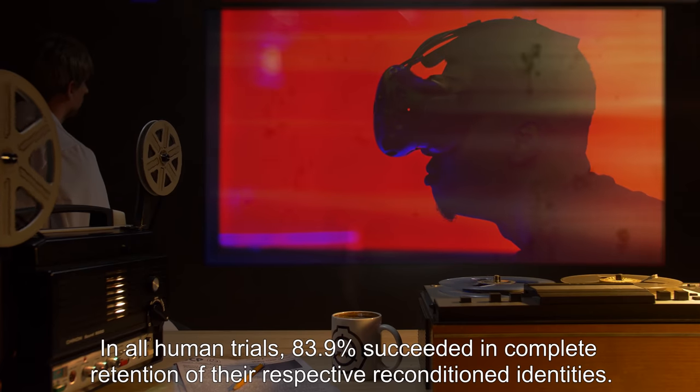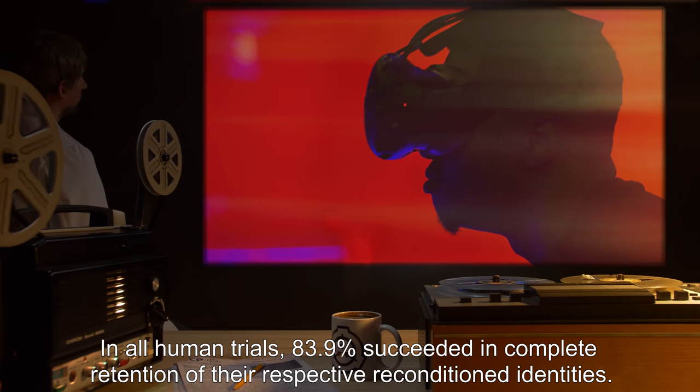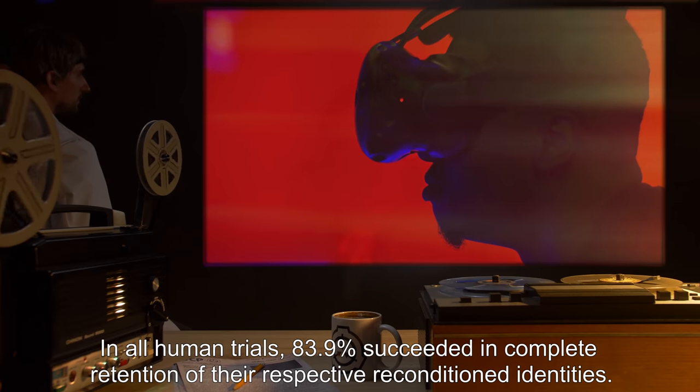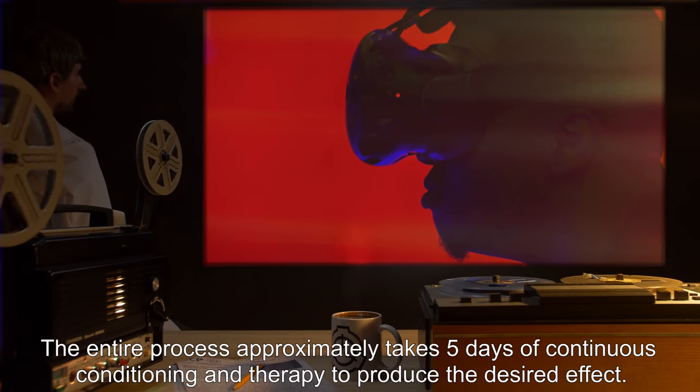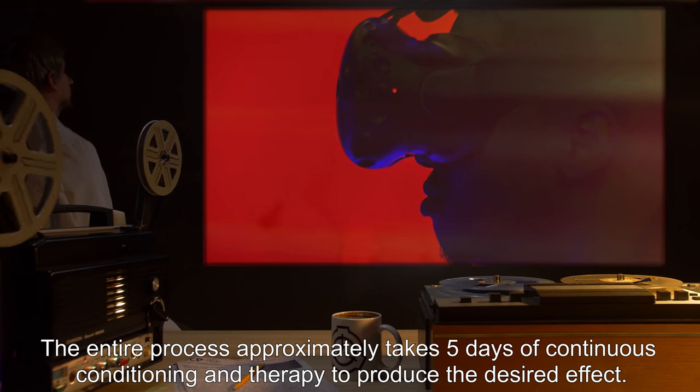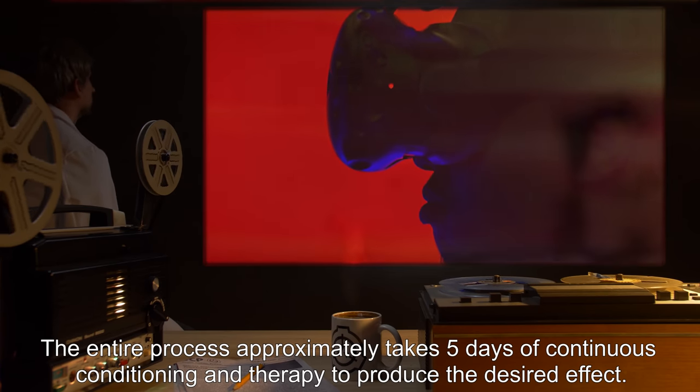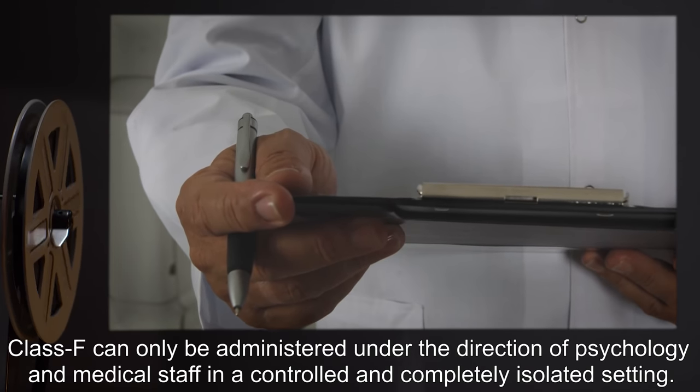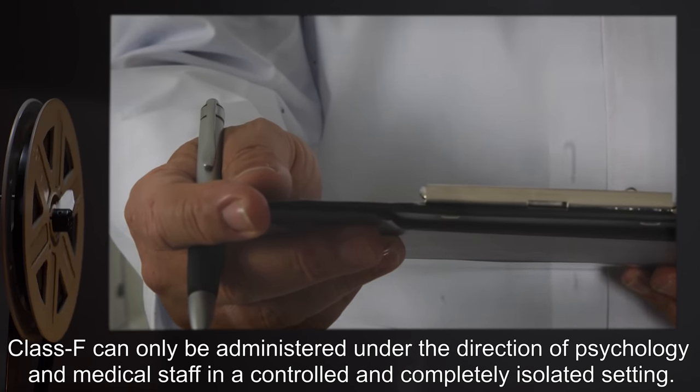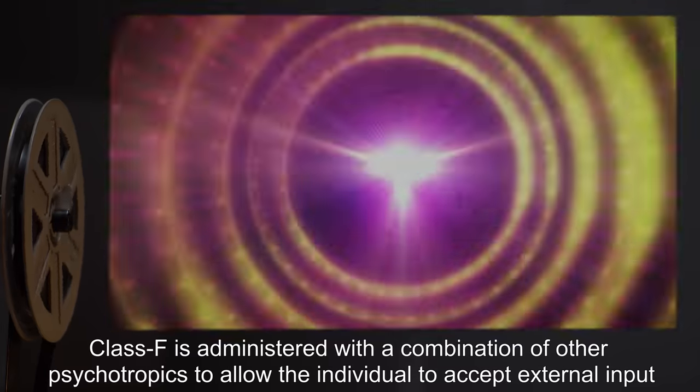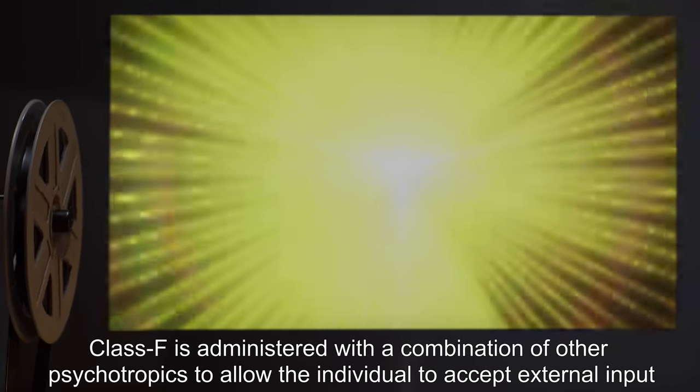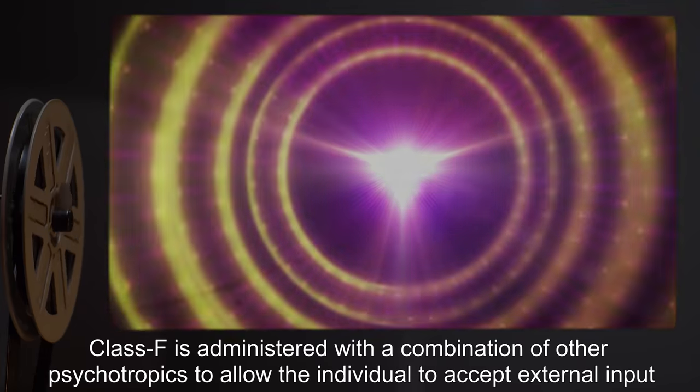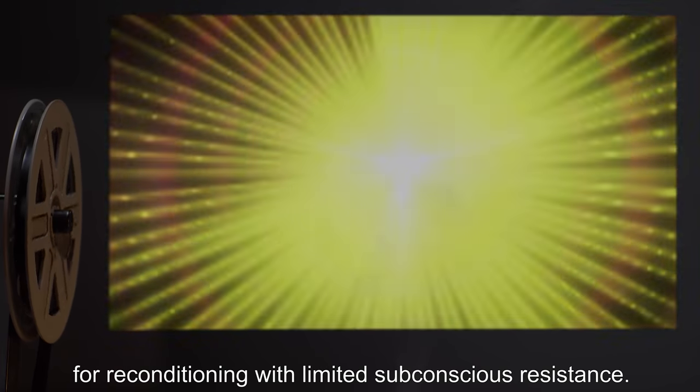In all human trials, 83.9% succeeded in complete retention of the respective reconditioned identities. The entire process approximately takes five days of continuous conditioning and therapy to produce the desired effect. Class F can only be administered under the direction of psychology and medical staff in a controlled and completely isolated setting. Class F is administered with a combination of other psychotropics to allow the individual to accept external input for reconditioning with limited subconscious resistance.